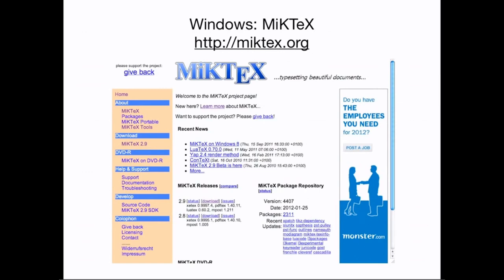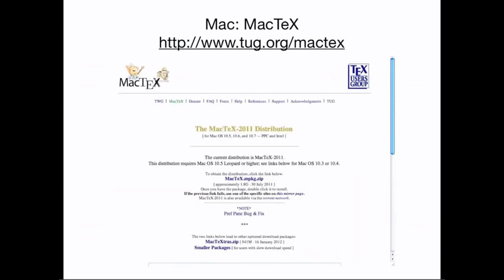If you're a Windows user, the standard LaTeX system is called MiKTeX and can be downloaded from miktex.org. If you use a Mac, the standard system is called MacTeX and can be downloaded from tug.org/mactex. The MacTeX extras are utilities like an equation editor, but they're not necessary. If you're a Linux user, your distribution probably already has LaTeX installed — check your package management system.